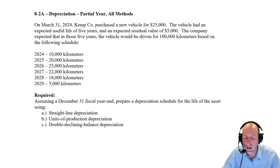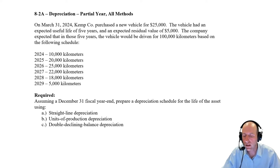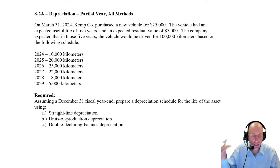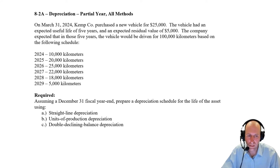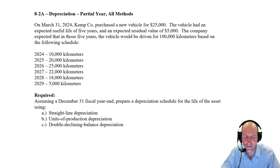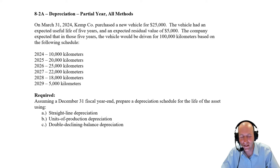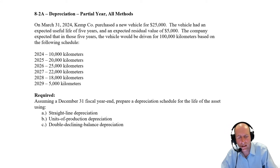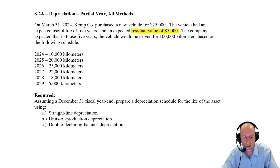On March 31st, 2024, Kemp Company purchased a new vehicle for $25,000. The vehicle had an expected useful life of five years and an expected residual value of $5,000. Residual value is a term we haven't really discussed so far. The key is the word residual — like residue, the stuff left over when something is done. Residual value is the leftover value. So we have this $25,000 vehicle, and after five years we think it's going to be worth $5,000. Another word you'll hear for residual value is salvage value — we think we can sell it for $5,000 afterwards.